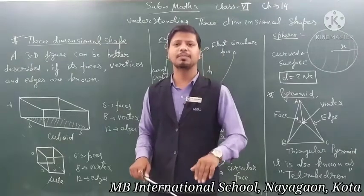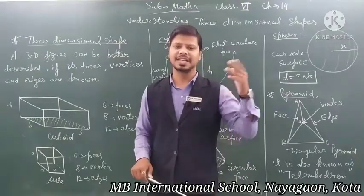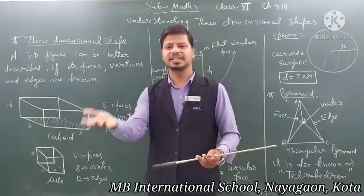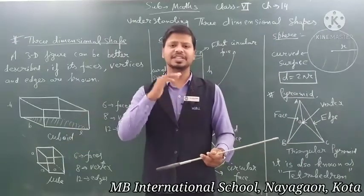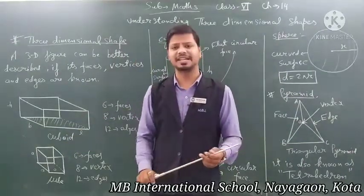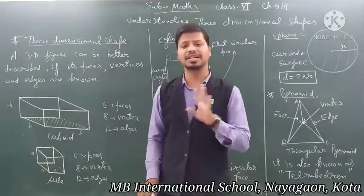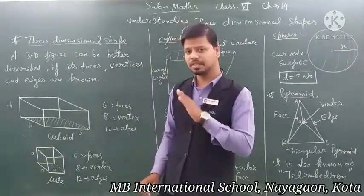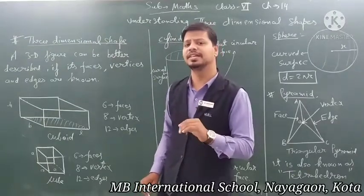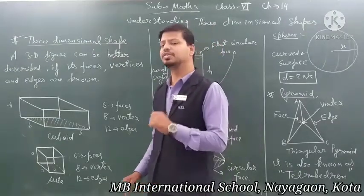A cuboid has a total of six flat surfaces: top surface, bottom surface, left surface, right surface, front flat surface, and back flat surface — total six flat surfaces for a cuboid.